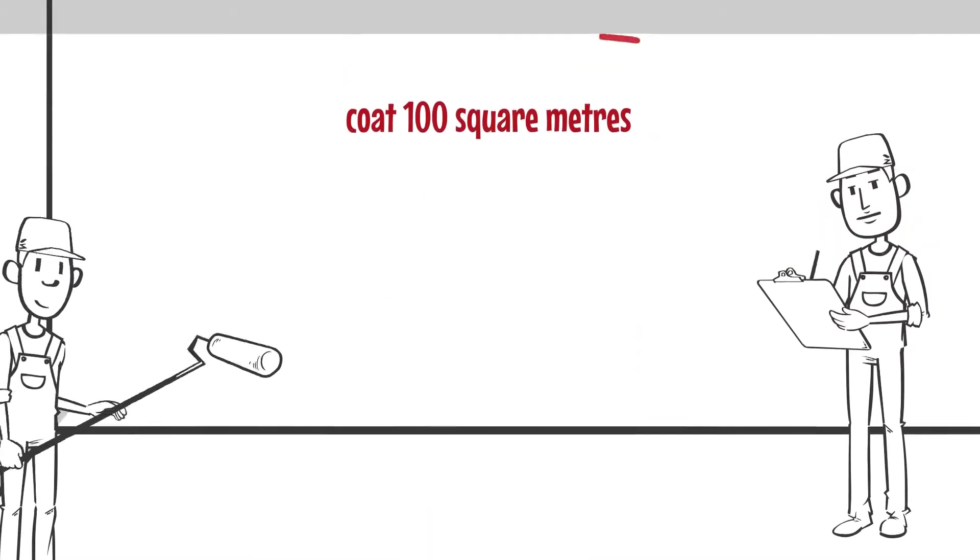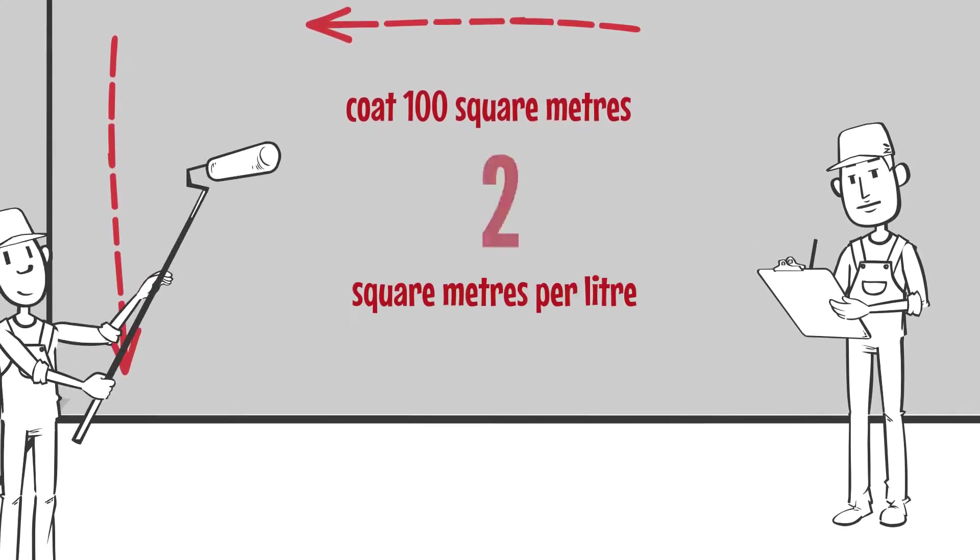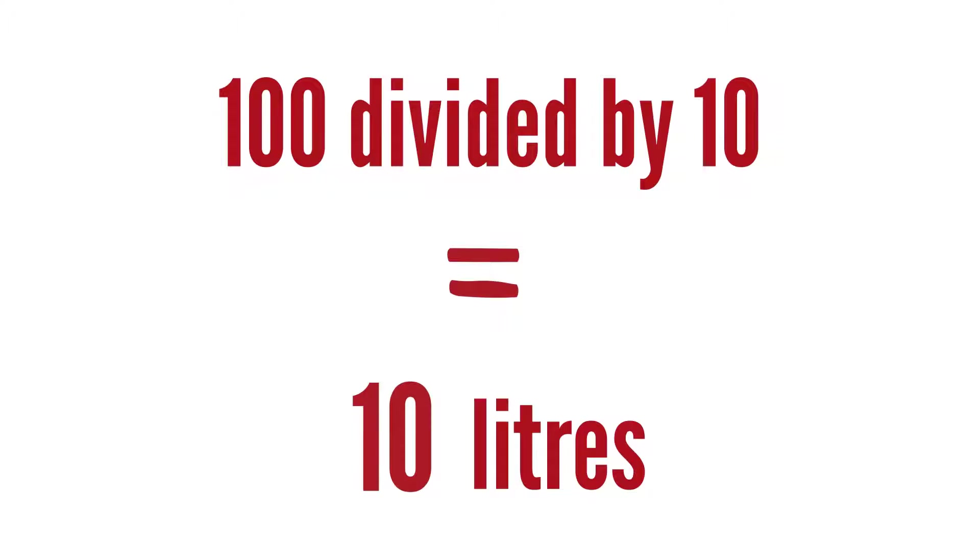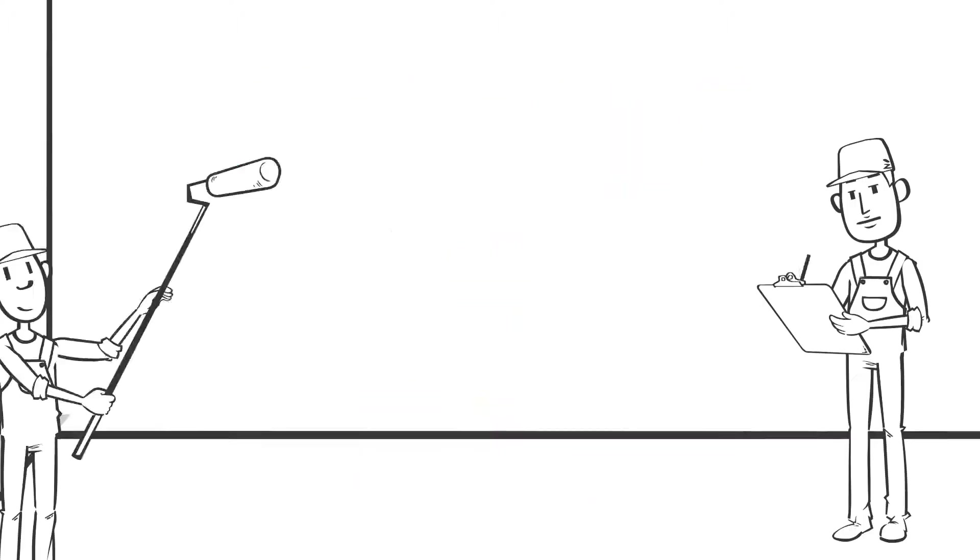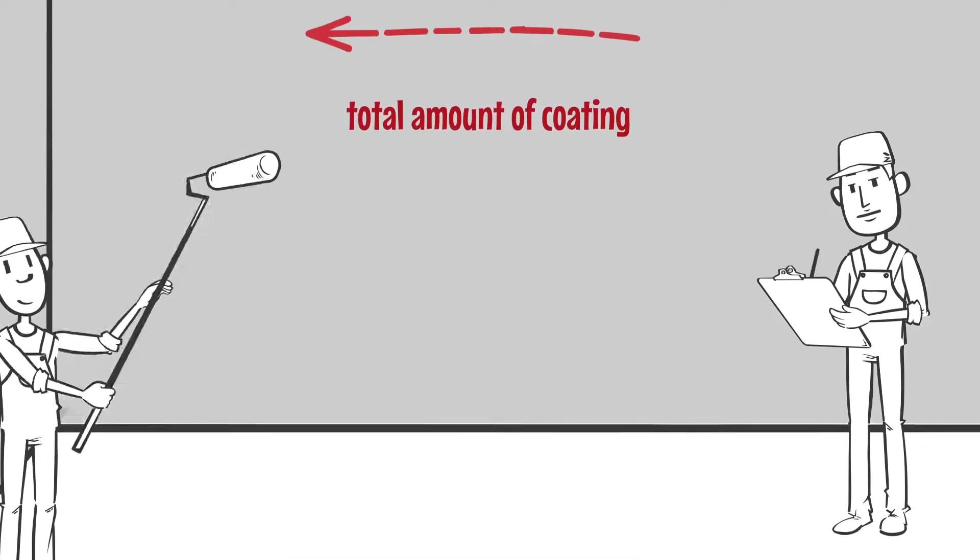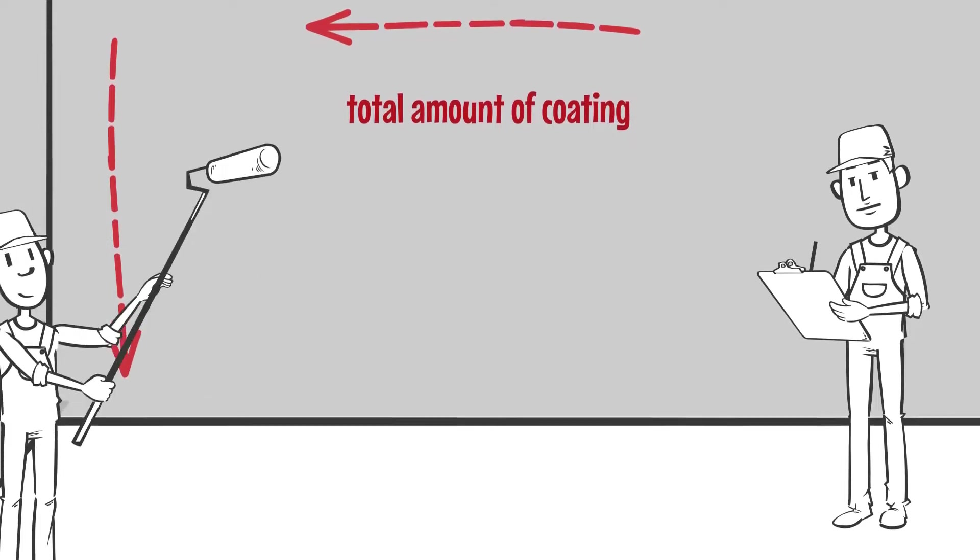For example, if you need to coat 100 square meters and the spread rate is 10 square meters per liter, 100 divided by 10 equals 10 liters. This is the total amount of coating you need to mix up for one coat for this job.